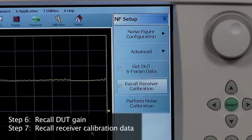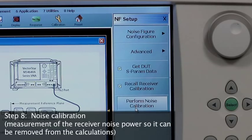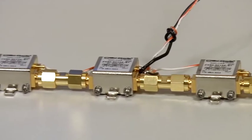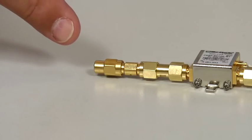We then perform step eight, the noise calibration, to calculate the receiver noise power so it can be removed from the calculations. Again, the Anritsu VectorStar cold source noise figure measurement methodology enables us to use a simple termination as the noise source.